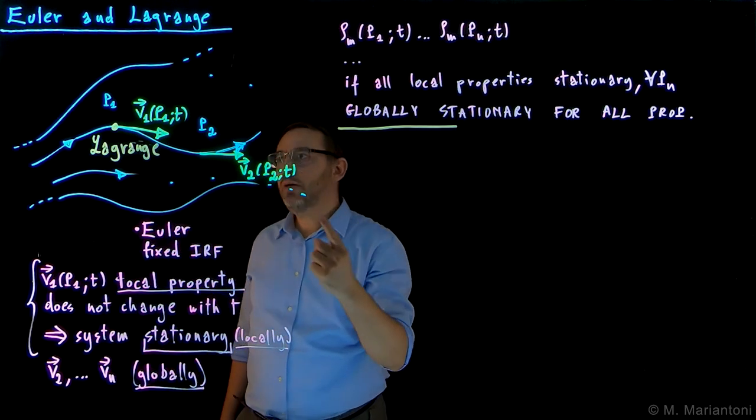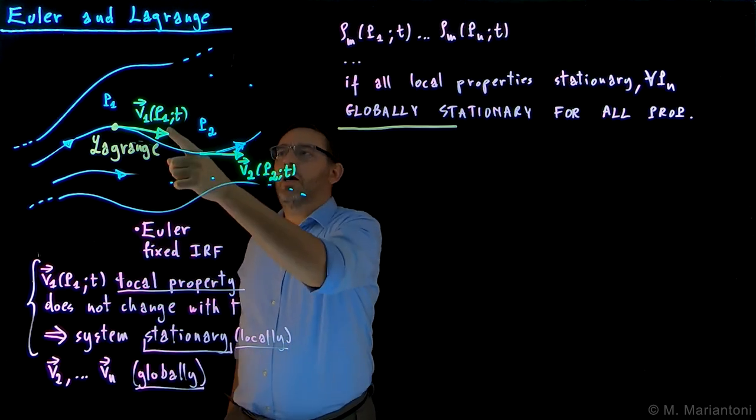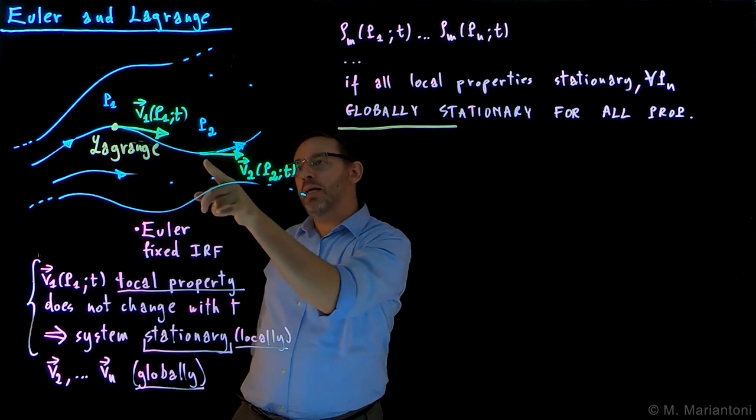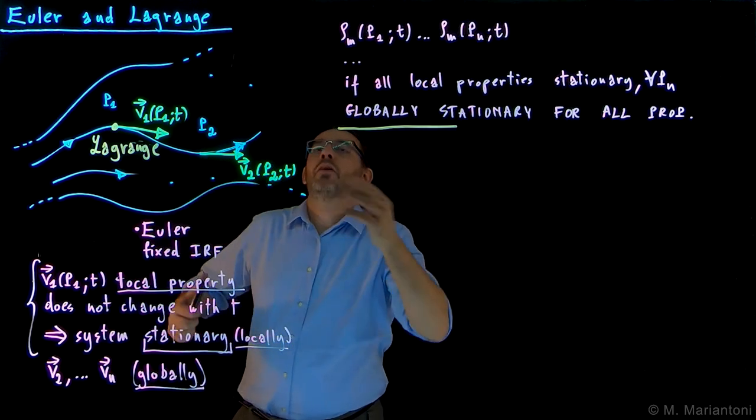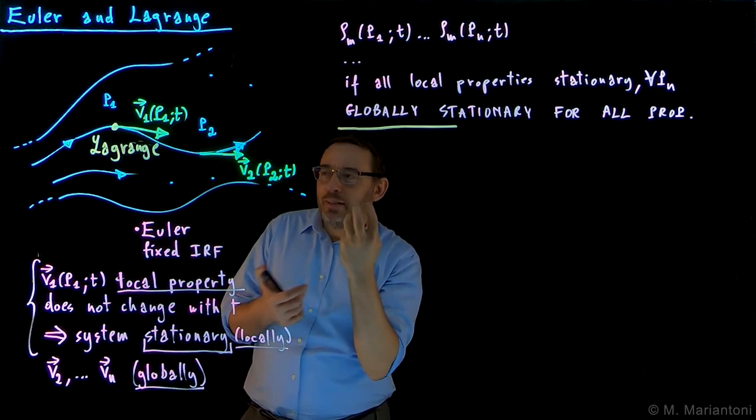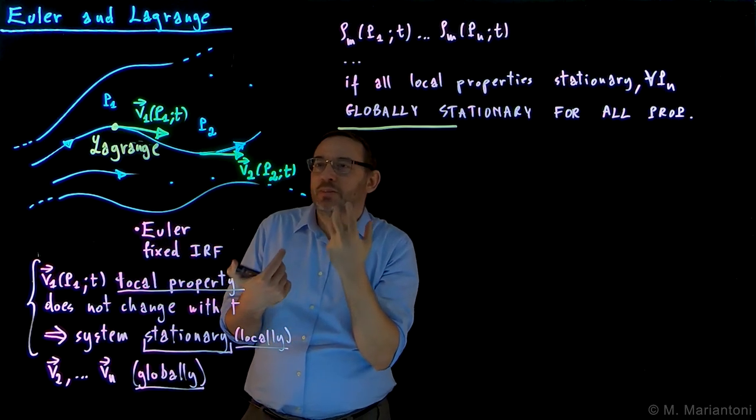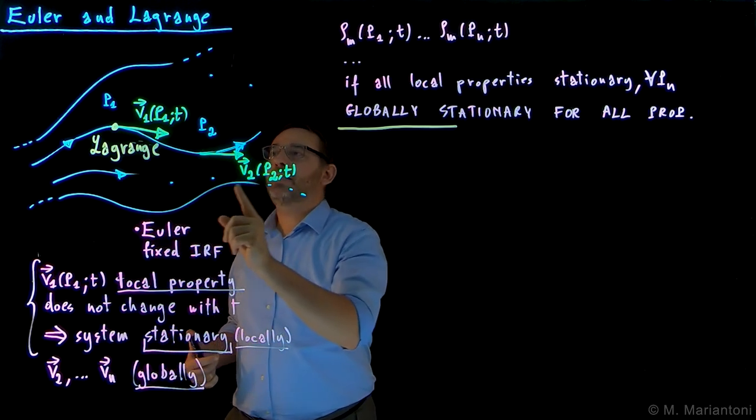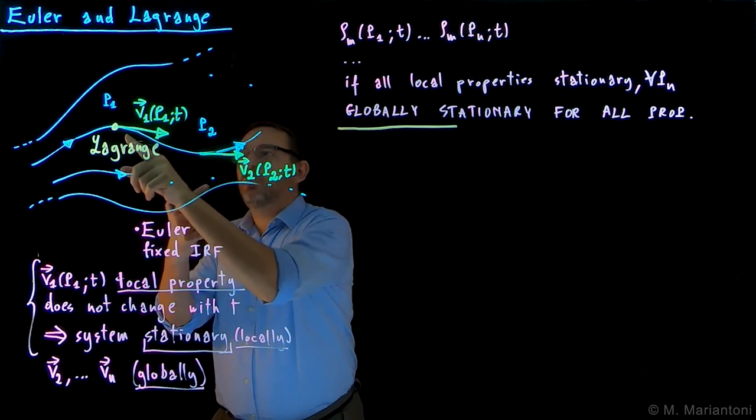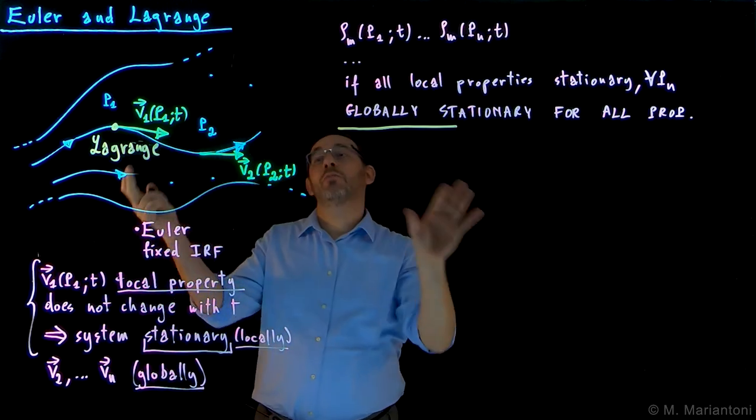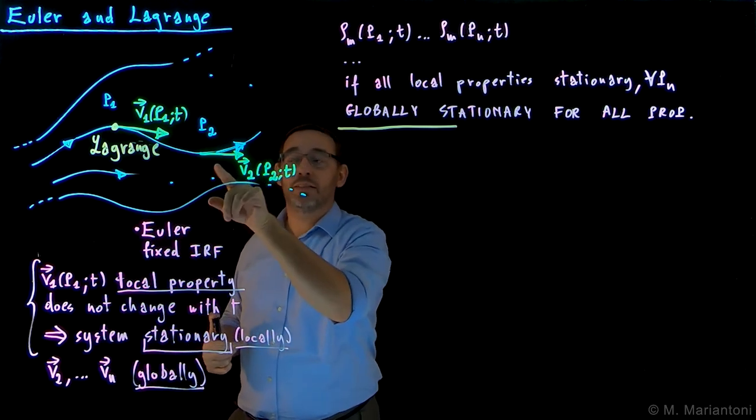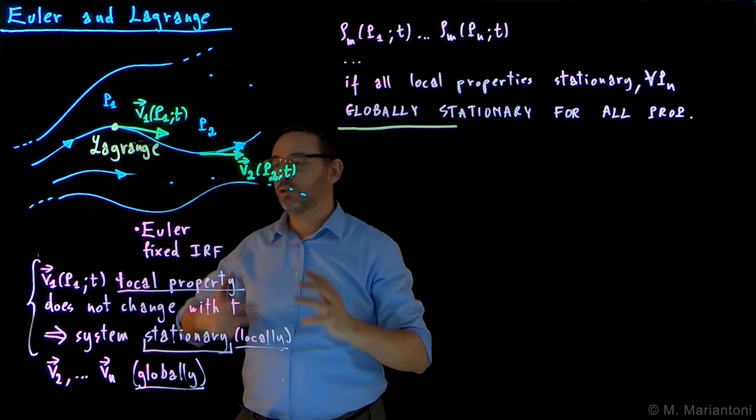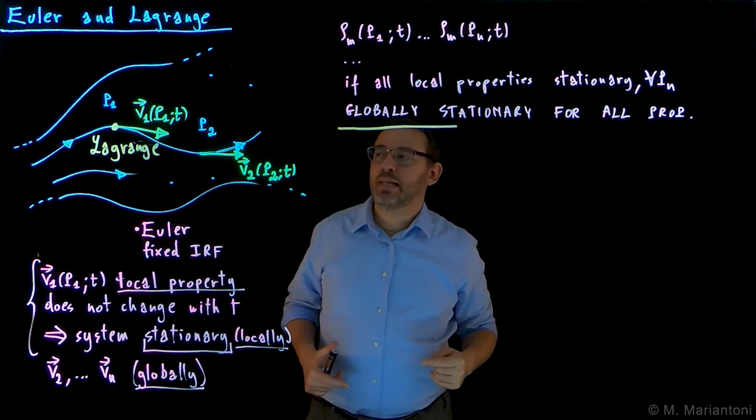And so it has a certain velocity v1 at this point P1, but when in the Lagrange approach, I eventually go to this point P2, then the velocity can be different. So I hope this kind of captures the importance of stationary, it doesn't mean that the velocity is the same everywhere. It means that in the Euler approach, each molecule has the same velocity at a certain point, the same thing for all points, but the same molecule can have two different velocities at two different points, and it still is stationary. So it's a very subtle point, that's why I think the Lagrange approach really allows, compared to Euler, to understand this subtlety.